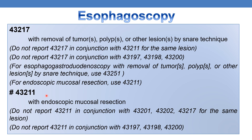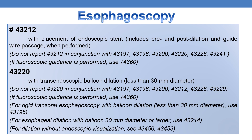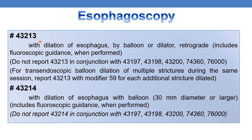CPT 43211 deals with esophagoscopy, flexible, transoral, with endoscopic mucosal resection. CPT 43212 deals with esophagoscopy, flexible, transoral, with placement of endoscopic stent. For esophagoscopy, flexible, transoral, with endoscopic balloon dilation less than 30 mm diameter, the CPT is 43222. CPT 43213 deals with esophagoscopy, flexible, transoral, with dilation of esophagus by balloon or dilator retrograde, including fluoroscopic guidance when performed.